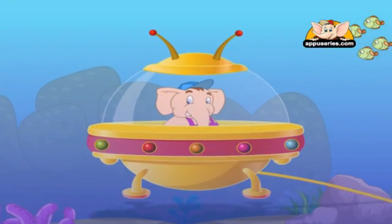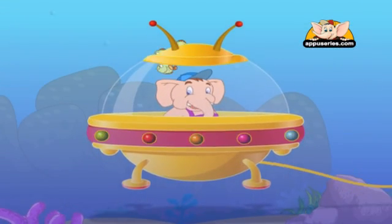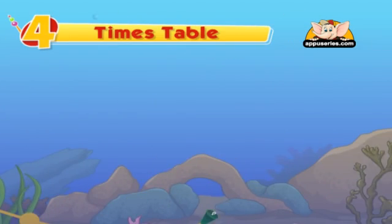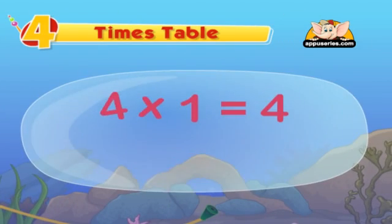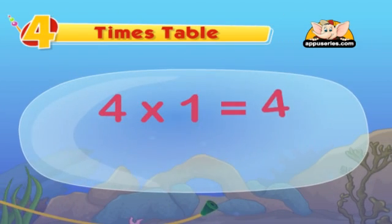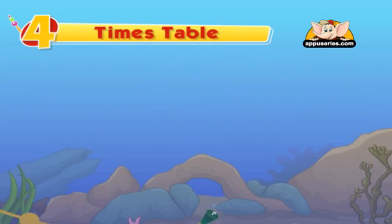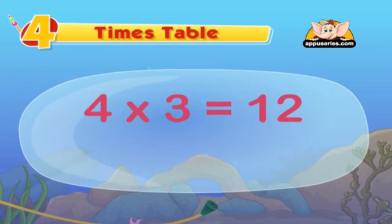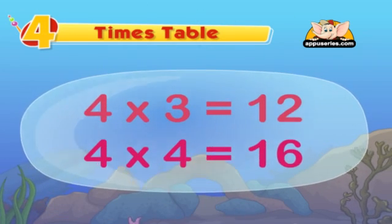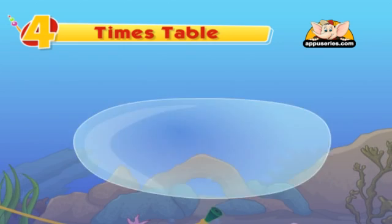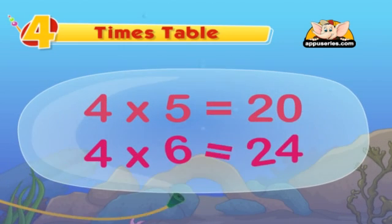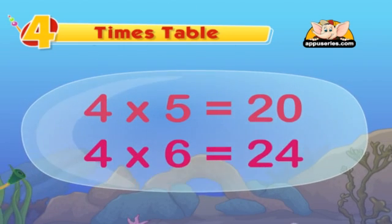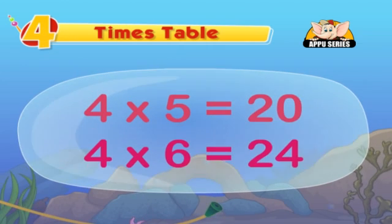We're doubling the number twice to get the answer. 4 1's is 4, 4 2's is 8, 4 3's is 12, 4 4's is 16, 4 5's is 20, 4 6's is 24.